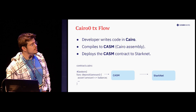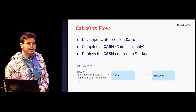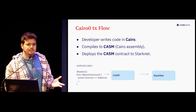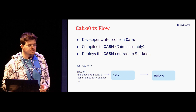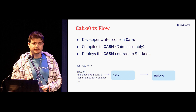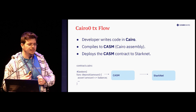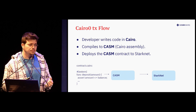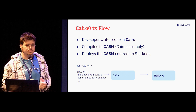Alright, so a bit of the motivation for why we have Sierra. Previously, in Cairo 0, this is how a transaction flow occurs. First, the developer writes a contract in Cairo. The compiler compiles it down to Cairo Assembly — to Casm — and then the developer deploys this Casm contract to StarkNet.